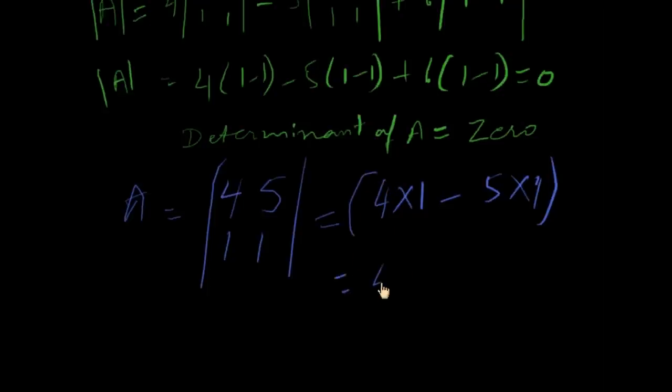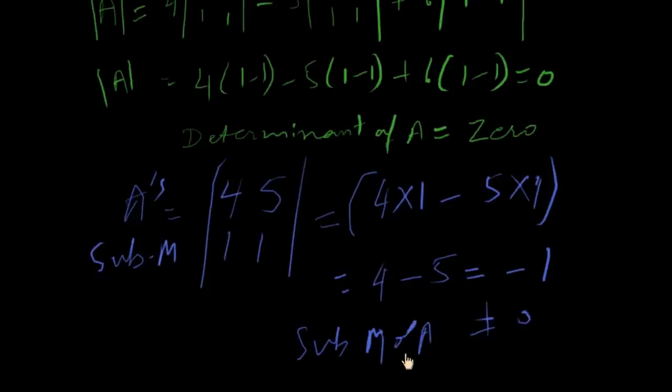Four minus five and determinant is minus one which is not zero, so this sub-matrix of A is not zero, so its order is two rows, two columns.